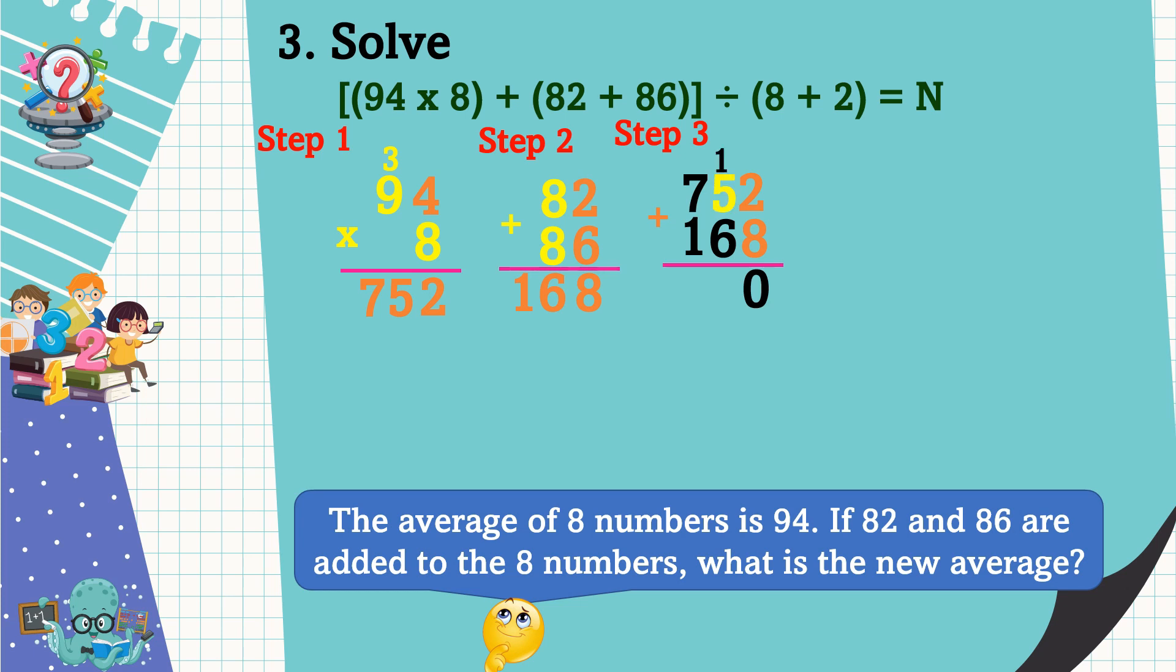To get the new total, let's add step 1 and step 2. So 752 added to 168: 2 plus 8 is equal to 10, regroup 1. 1 plus 5 plus 6 is equal to 12, regroup 1. 1 plus 7 plus 1 is equal to 9. 920 is the new total.